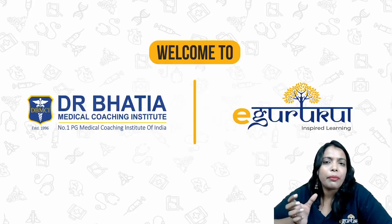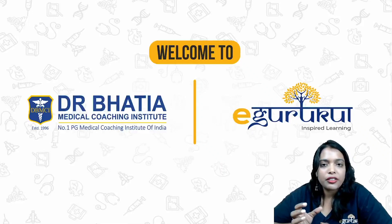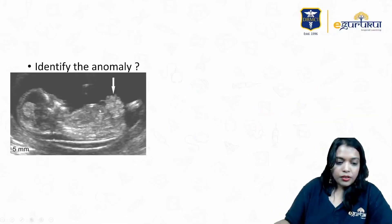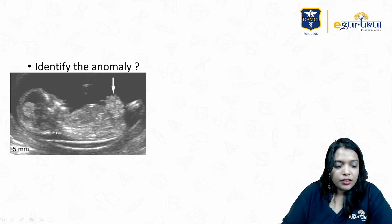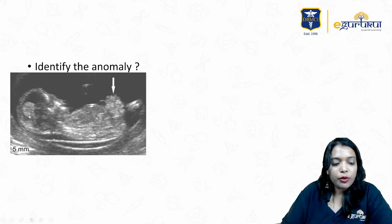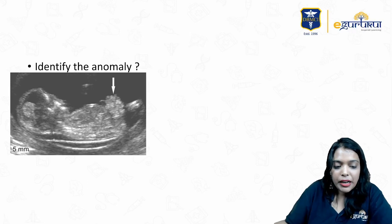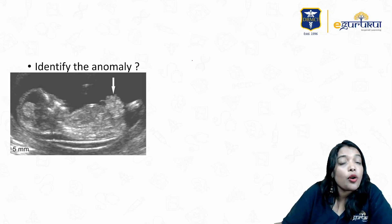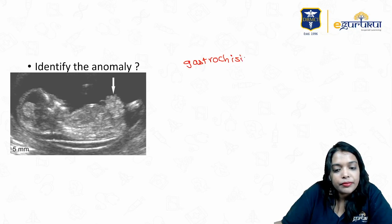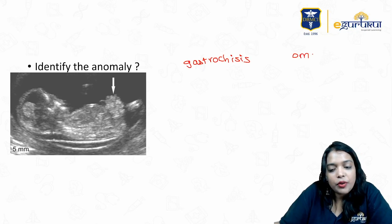So what do you think is this anomaly? There are two things you have to observe which are defective here. First, if you observe the NT scan, the nuchal translucency is around 5mm. Apart from that, in the midline you're seeing something abnormally bulging out from around the umbilicus. Most of the time we get confused between two options: gastroschisis and omphalocele.